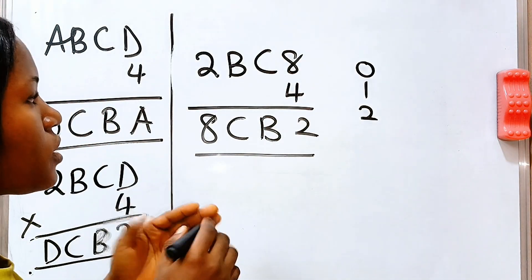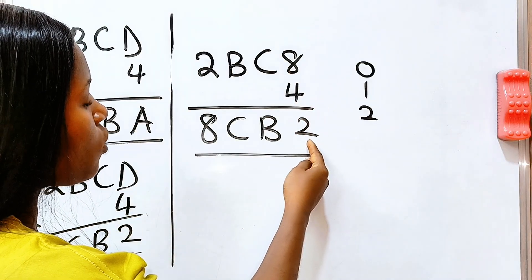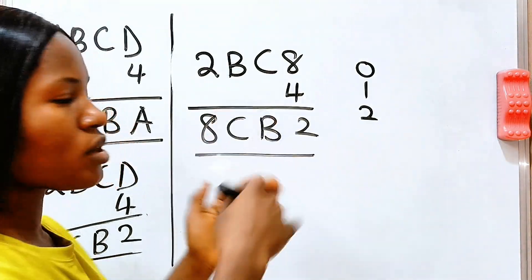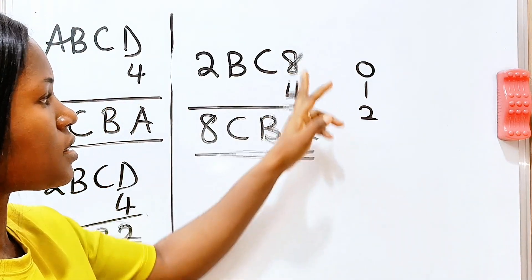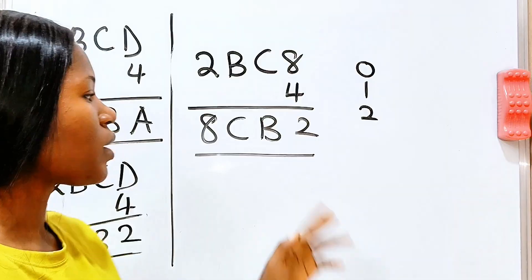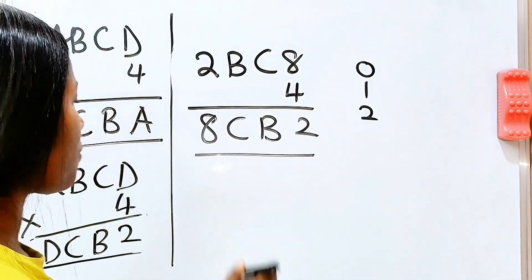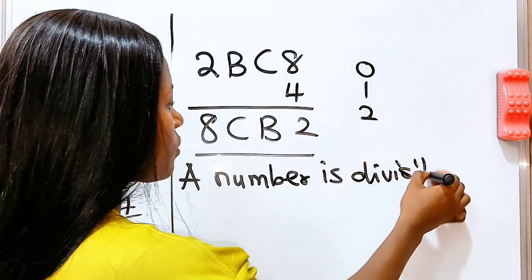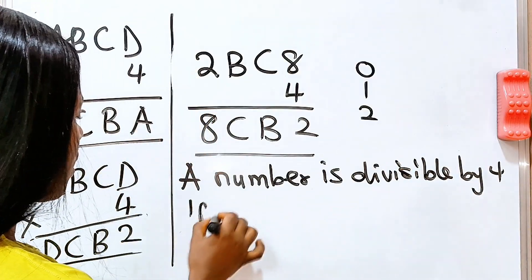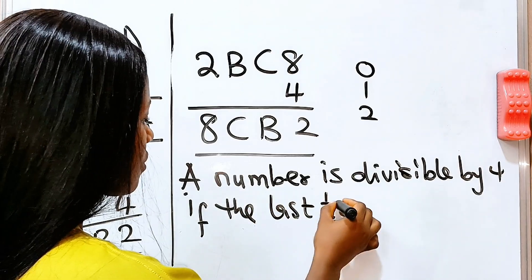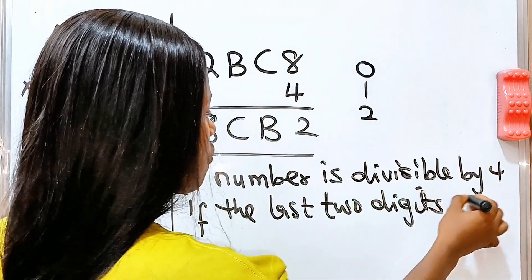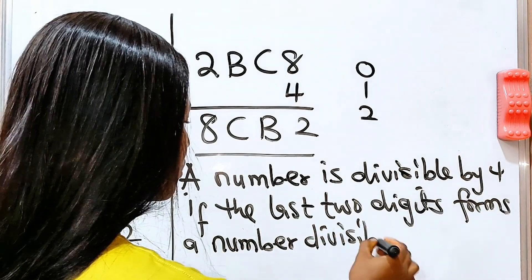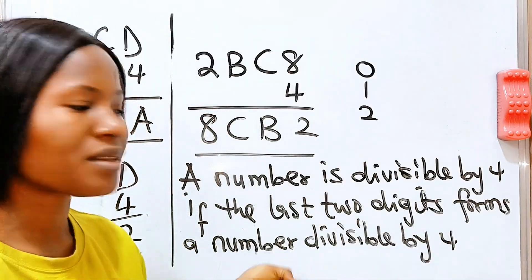Now, this is what we will do. This number must be divisible by 4 since we got it from this times this. And for a number to be divisible by 4, the last two digits must be divisible by 4. That is law of divisibility. A number is divisible by 4 if the last two digits forms a number divisible by 4.